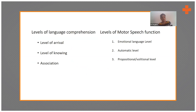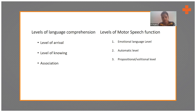Now that we've learned about language, let's look at the levels of language comprehension. There are three overall levels. First is the level of arrival, where a person merely notices or perceives a symbol. Second is the level of knowing, where the symbol is recognized. Third is association, where the person uses recall and past experience to associate it with the current situation to form an answer.